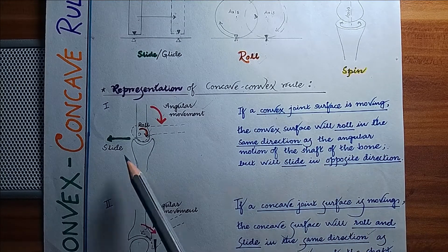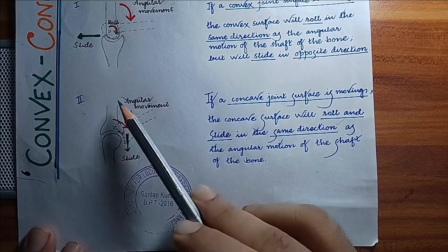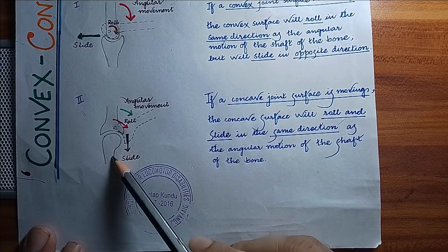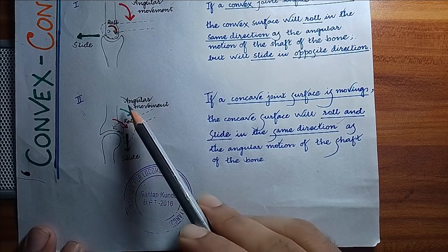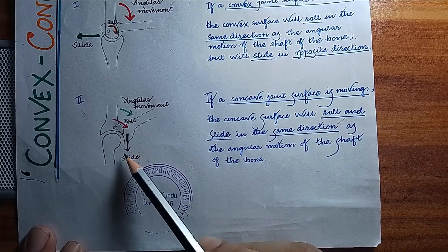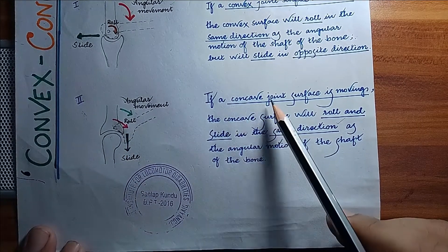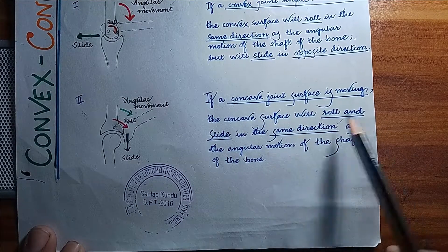In the second figure, you can see a concave joint surface is moving over a convex joint. Here, if the angular movement occurred in this direction, the roll and the slide will occur in the same direction. If a concave joint surface is moving, the concave surface will roll and slide in the same direction as the angular motion of the shaft of the bone.